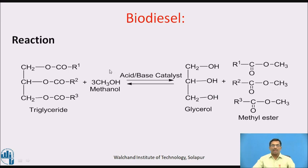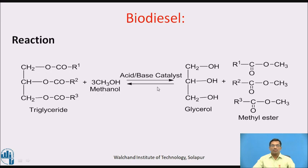The methyl alcohol breaks open and forms methyl and hydroxyl groups. These radicals attack the carbon of the triglycerides, forming CH₂OH. The OH comes from methanol, and CH₂OH, CHOH, and CH₂OH together form glycerol. Meanwhile, the methyl group attaches to the oxygen of the triglyceride, forming R'–COO–CH₃ — that is, R'–C(=O)–O–CH₃. This methyl ester is used as biodiesel.